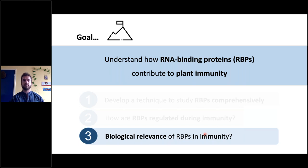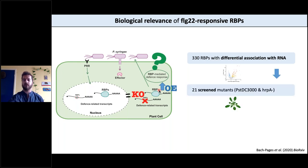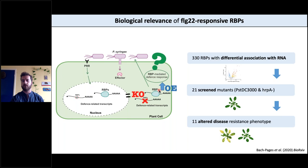Now that we have found all these RBPs that change activity, we wanted to know if these proteins are involved in immunity. If we knocked them out or overexpressed them and then challenged with a pathogen, we should see a phenotype. Out of the 330 RBPs we identified, we selected 21 mutants and challenged them with Pseudomonas syringae pv. tomato DC3000, which elicits disease in Arabidopsis, and also its hrcA mutant which cannot deliver effectors and induces PTI — pattern-triggered immunity. We found that 11 of them show altered disease resistance.